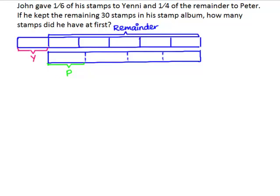Next, we see that John kept the remaining 30 stamps in his stamp album. This portion of the model will represent the 30 stamps.